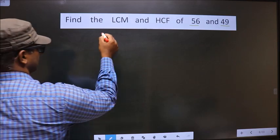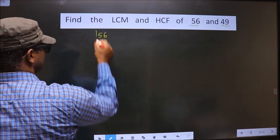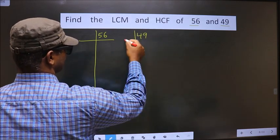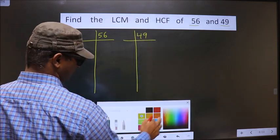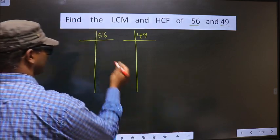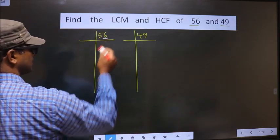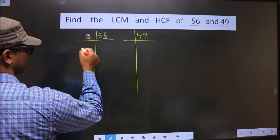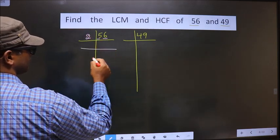That is 56 and 49. Now, for this number, the last digit is 6 which is even, so we take 2 here. Now, the first number is 5.